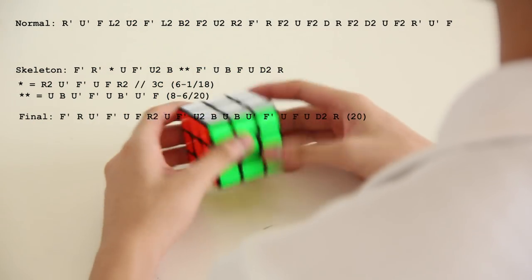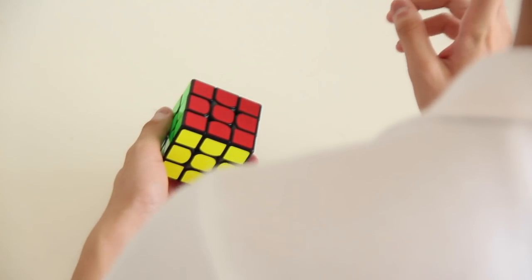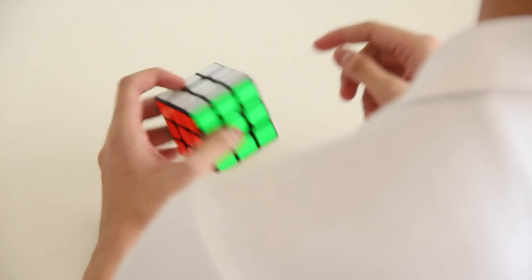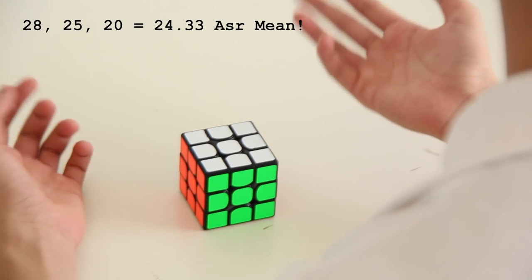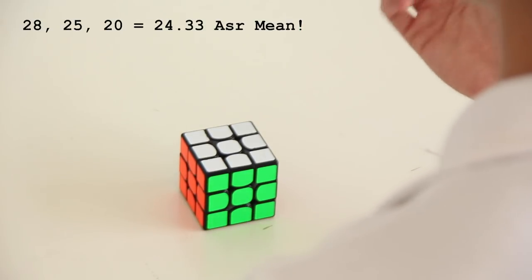Yay! That also ties my overall PB at the time, which was also 20. So yeah, that's ASR mean, 28, 25, and 20, which gives 24.33.